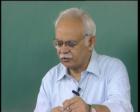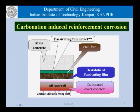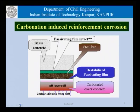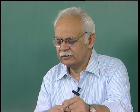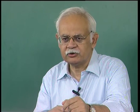Once this passivating film is damaged or becomes thermodynamically unstable, the steel bar is destabilized on account of reducing of the pH, as it happens in the case of carbonation, and the bar is rendered susceptible to corrosion.